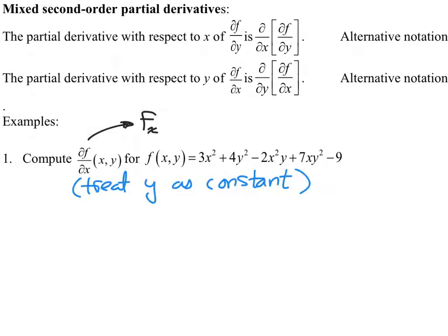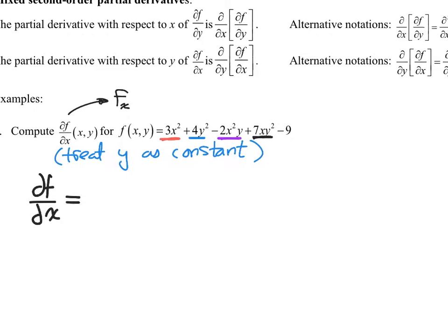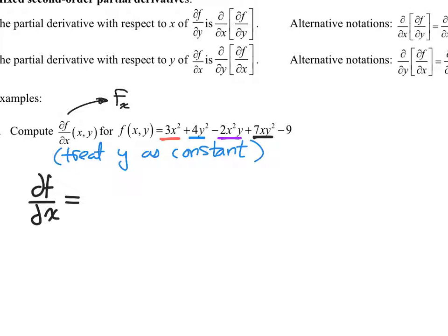This notation tells us to treat y as constant and differentiate with respect to x. There are multiple forms of partial derivatives. The two most popular are delta f over delta x, and also lowercase f with a little subscript x — that means the same thing. People like the subscript notation for obvious reasons: it's less writing. When you get into second order partials, there's a mixed second order partial — first derivative with respect to x, second derivative with respect to y. Using the subscript notation, it's much simpler.